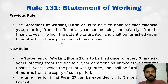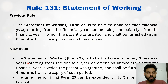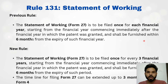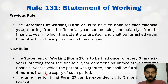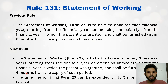Now the applicant need not submit the statement of working — Form 27 — every year. Instead, they have to submit it once in three years. The new rule states that Form 27 is to be filed once for every three financial years, starting from the financial year commencing immediately after the financial year in which the patent was granted, and shall be furnished within six months from the expiry of such period. The only difference is that instead of filing each year, they can now file once in three years.